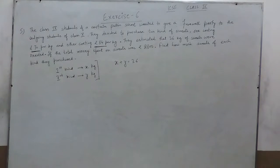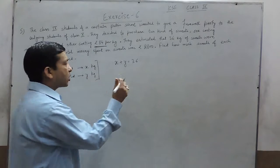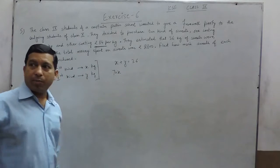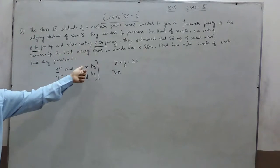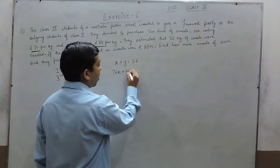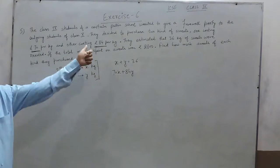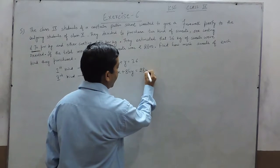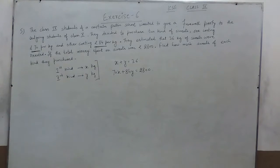Another equation is the costing of these sweets. x kg of first kind will cost 70x because it is Rs.70 per kg, so x kg will cost us 70x plus, second costing will be 84y because we are purchasing y kg and the cost is Rs.84 per kg and the total amount is Rs.2800. So, these are the two equations.